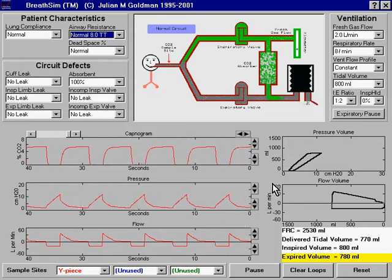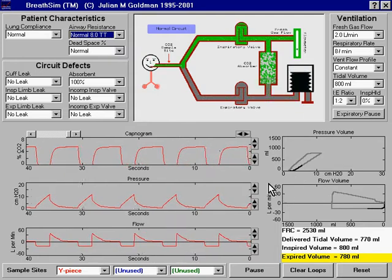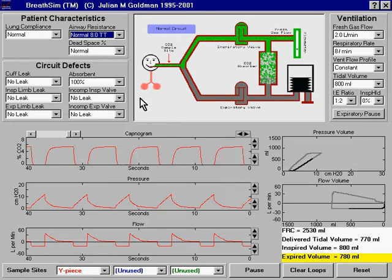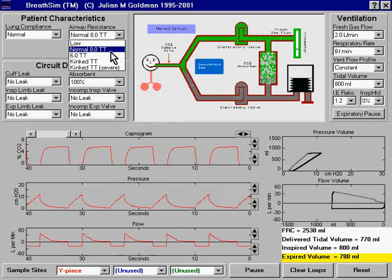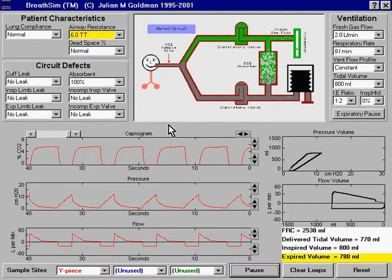We should also take a moment to look at the pressure volume loop and the flow volume loop. Now, let's increase airway resistance by substituting a size 6 millimeter tracheal tube for the 8 millimeter tracheal tube.